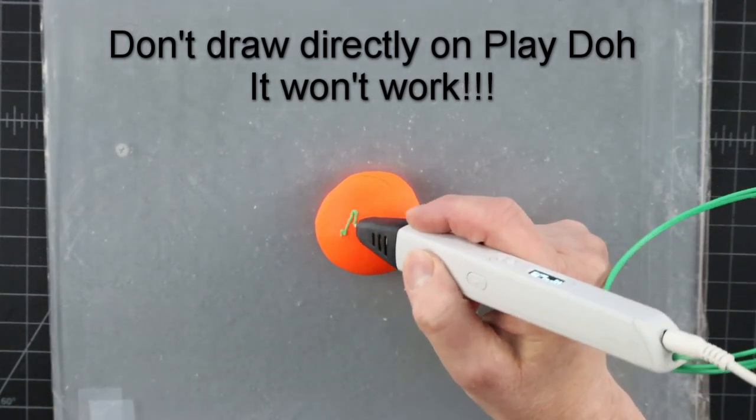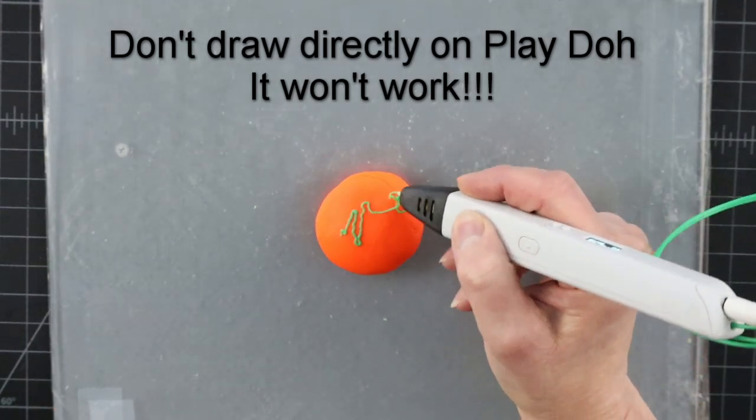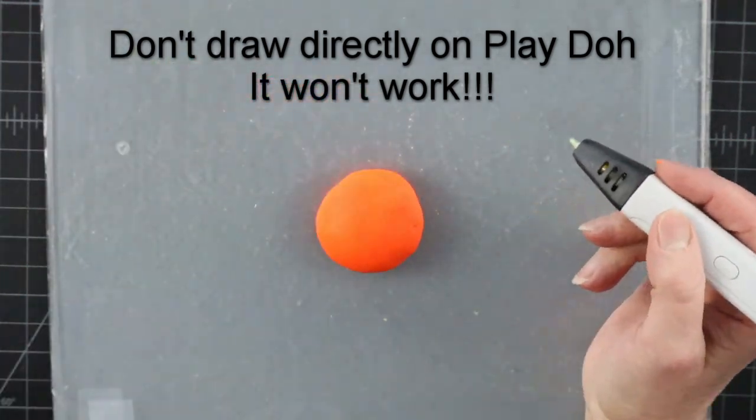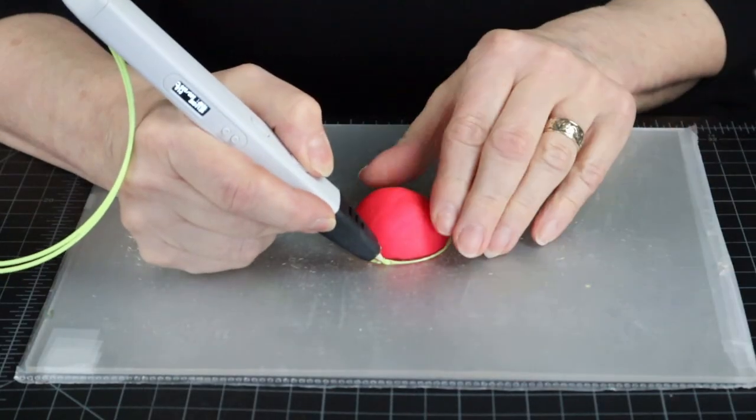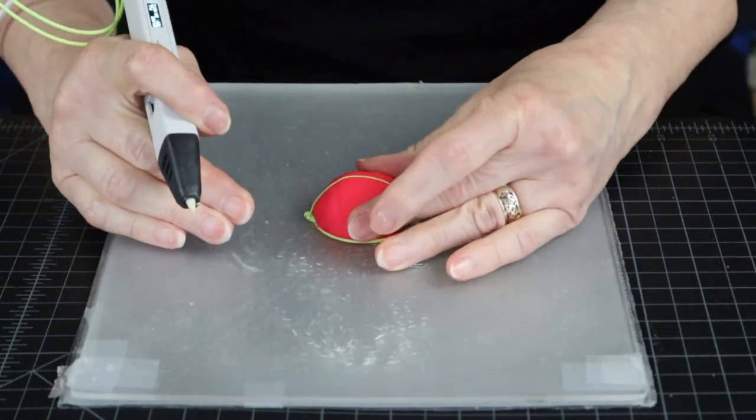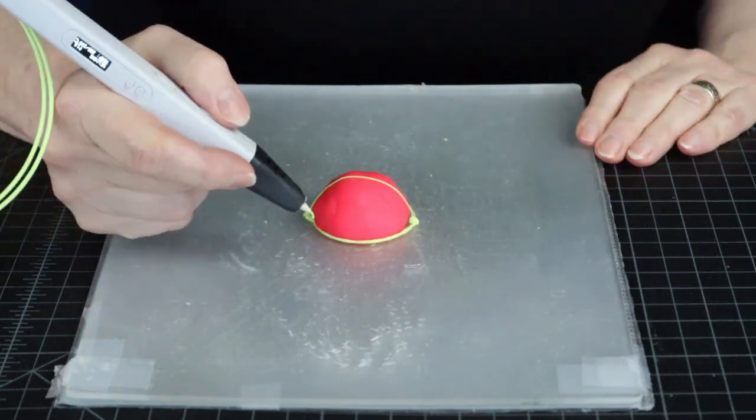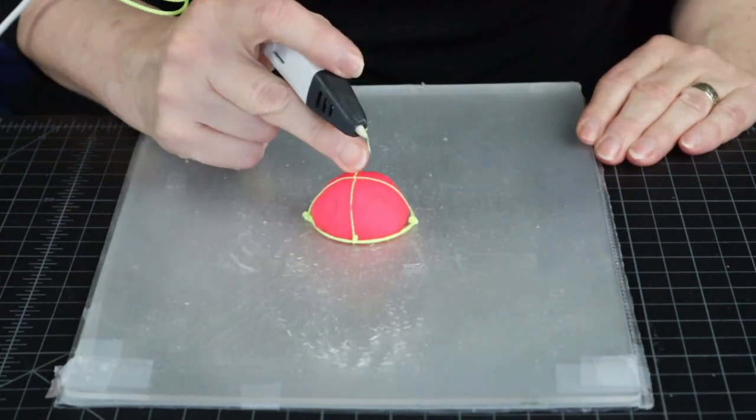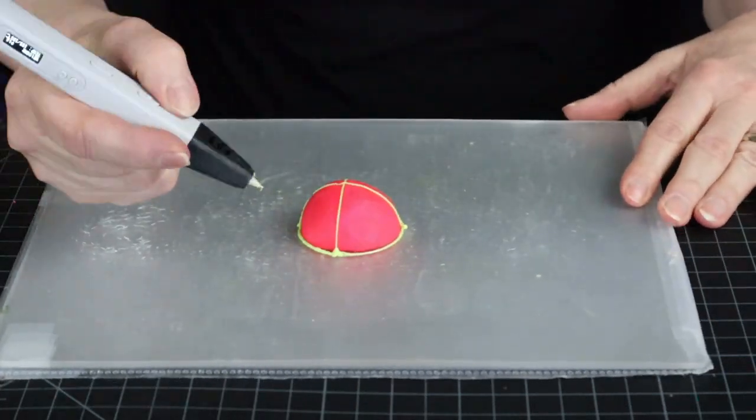Don't try to draw on the play-doh, though. It won't stick, and that's a good thing. The clay is there just to stretch the plastic strands around it in the right shape and stick them to the original outline, to create a little cage shaped like the object you want to make.